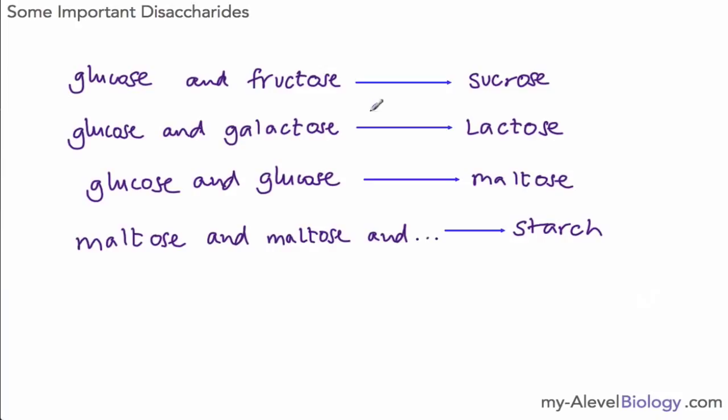What you also need to know is the fact that we have some important disaccharides that you need to remember, and those are sucrose, lactose, maltose. And while starch is not a disaccharide, you need to remember that it's made of loads of maltose units. So glucose and fructose makes sucrose.